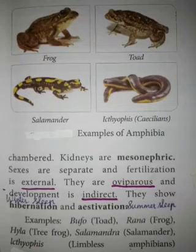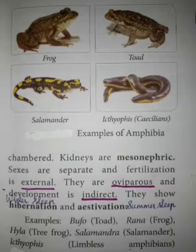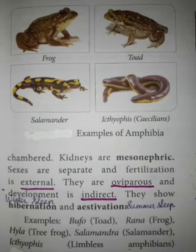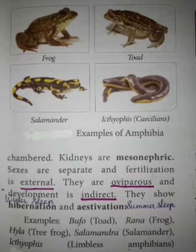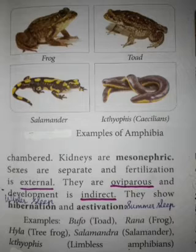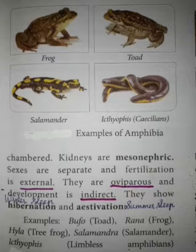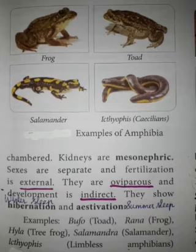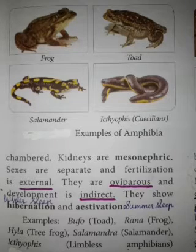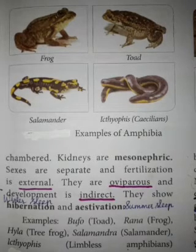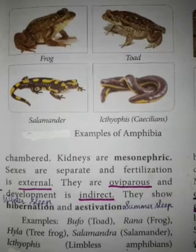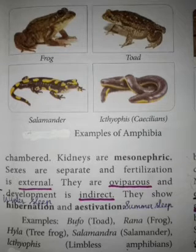The heart is three-chambered. The kidneys are mesonephric kidneys. Sexes are separate — there are female and male organisms. Fertilization is external, which means fertilization takes place outside the body — the female lays the eggs and the male ejects the sperms. They are oviparous, meaning they lay eggs, and development is indirect.